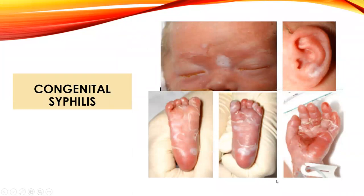Congenital syphilis is one of the biggest issues in Kern County right now. Women are tested at the beginning of pregnancy during prenatal labs, again in the third trimester, and again on the day of delivery. To treat syphilis in the early phase is just a dose of antibiotic. If caught early, congenital syphilis can be avoided — because these babies do not do well if infected while in the womb.